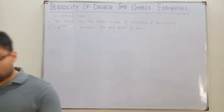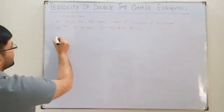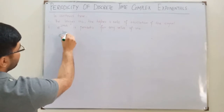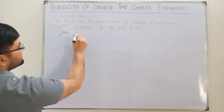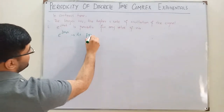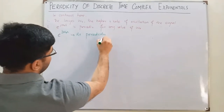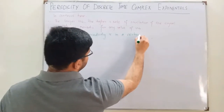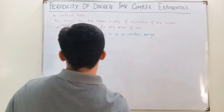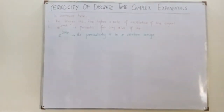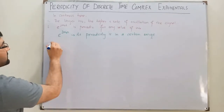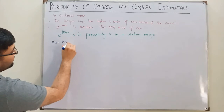But if we come to the discrete time, the signal is e^(j*omega_0*n), and its periodicity is only in a certain range. Let's consider this signal e^(j*omega_0*n) and increase omega naught by replacing it with omega naught plus 2 pi.